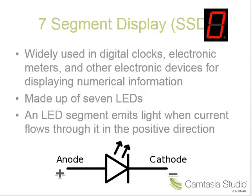We see that the zero is displayed. The seven segment display is made up of seven LEDs. We can see with the zero displayed, we have six LEDs that are lit up or are on. We can talk about the electronics of an LED. An LED, or light emitting diode, emits light when a current flows through it in the positive direction. It has its own symbol — it is an electronic device. It looks very similar to an inverter, except it doesn't have the inverter bubble.